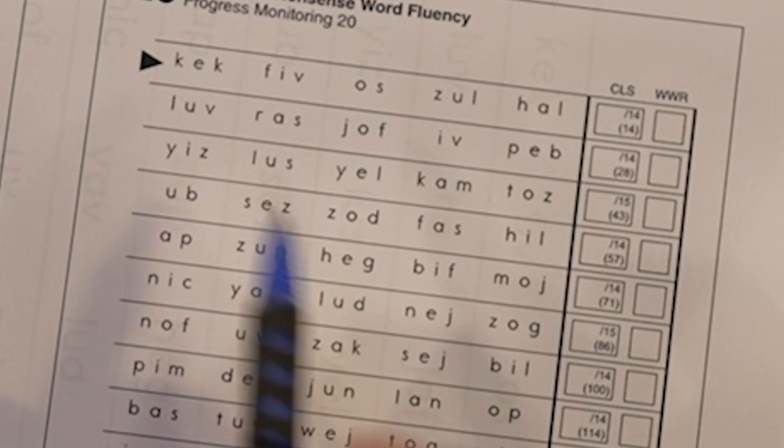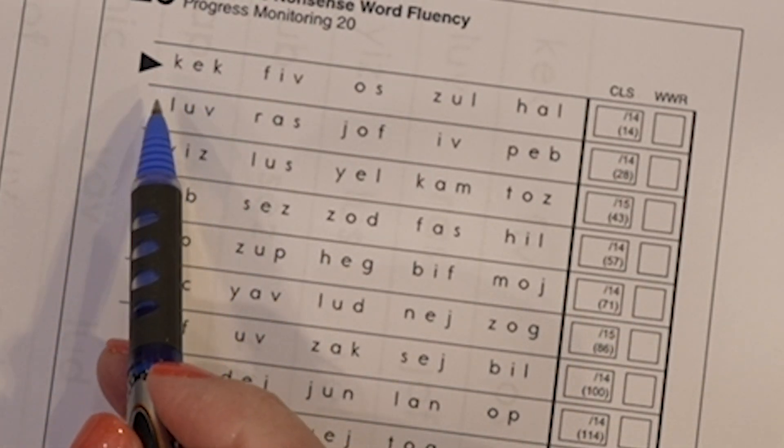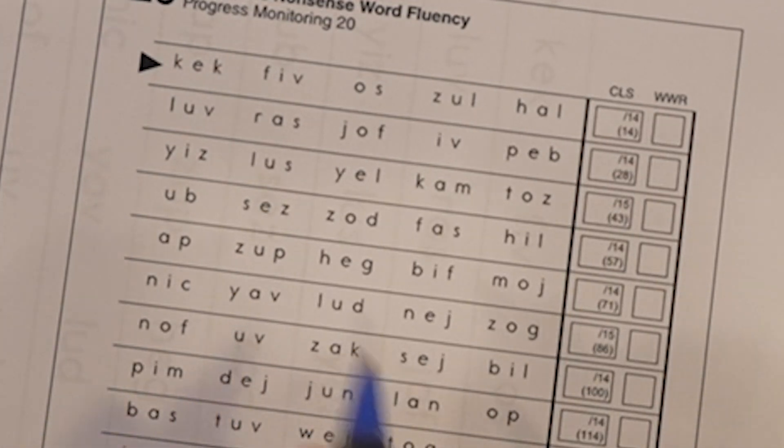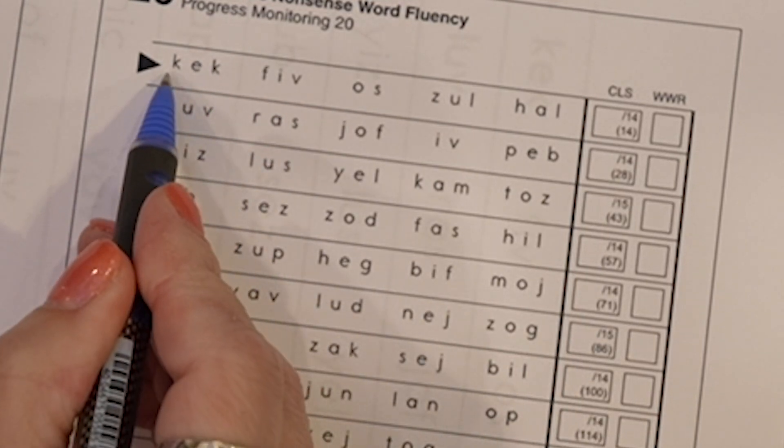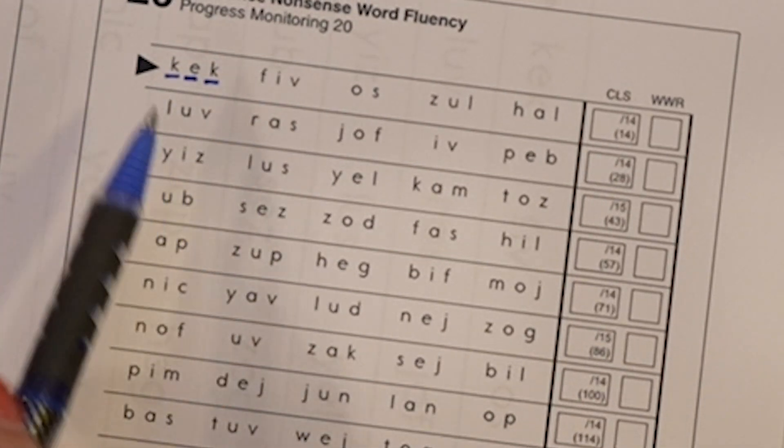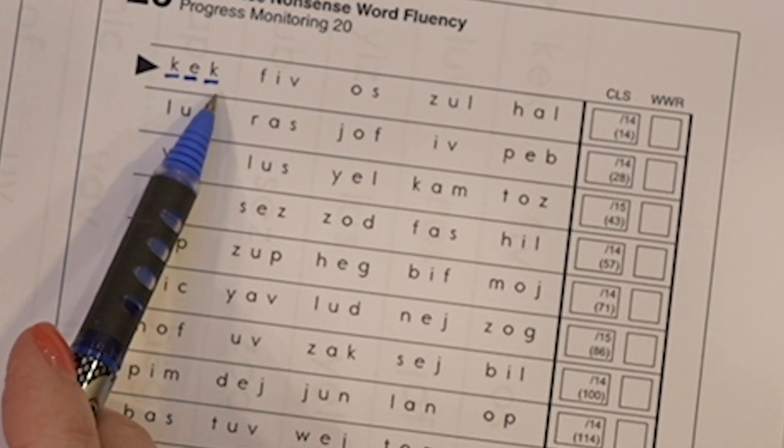So here we go. You start when the student begins. And you are going to underline it to score it the way the student says it. So if the student says three separate sounds you're going to do three separate lines.